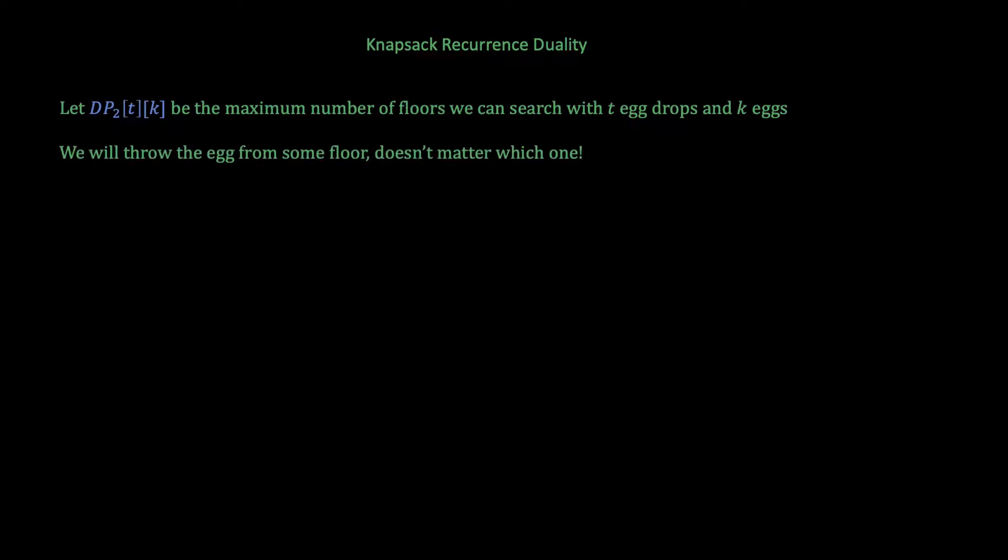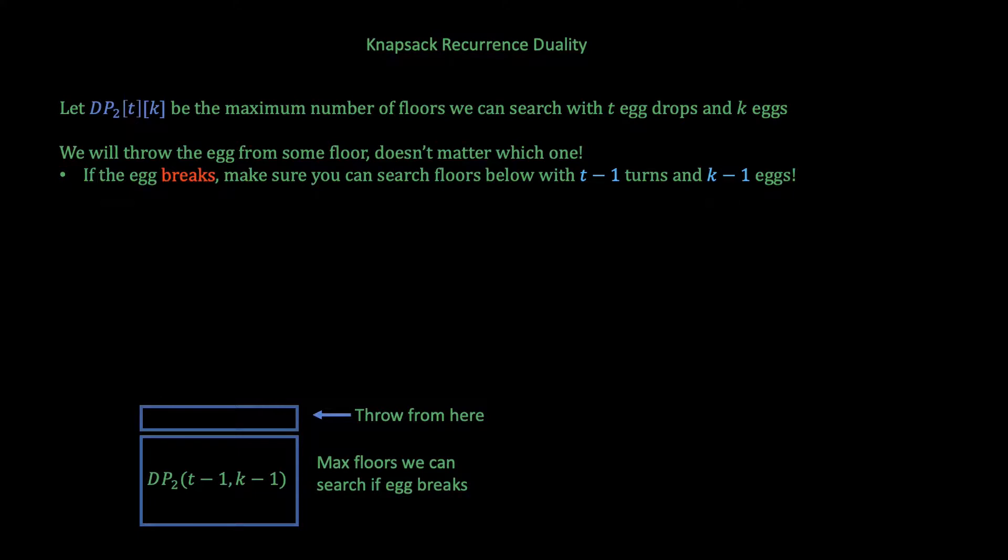But in this case what should the recurrence be? Let's imagine while we are solving DP2[T][K] we will throw the egg from some floor. Any floor really which doesn't matter. In this turn if the egg breaks then we need to make sure we can search the floors below where we threw the egg from with T-1 turns left and K-1 eggs left. So we can just stack DP2[T-1][K-1] floors below where we throw the egg or the maximum number of floors we can search in T-1 turns and with K-1 eggs.